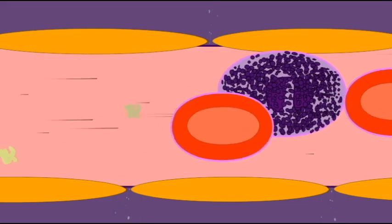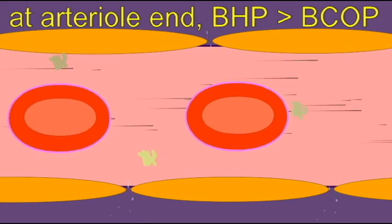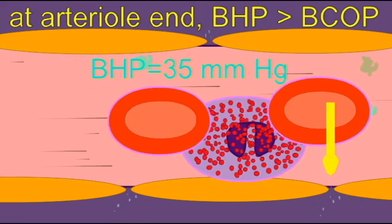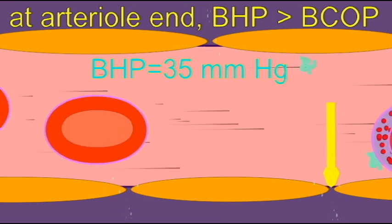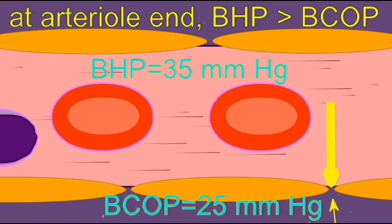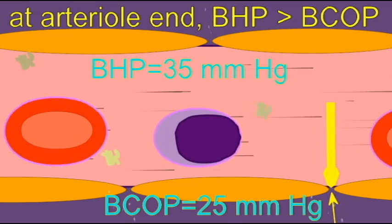At the arterial end of a capillary, the blood hydrostatic pressure, which is the outward-pushing force, exceeds the blood colloid osmotic pressure, or BCOP, which is an inward-pushing force.